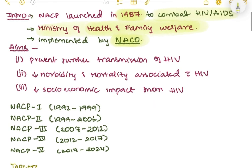Coming to the aims, NACP has three aims: prevention of further transmission of HIV, that means prevention of further HIV cases; decrease in morbidity and mortality associated with HIV; and decrease in the socioeconomic impact from HIV.